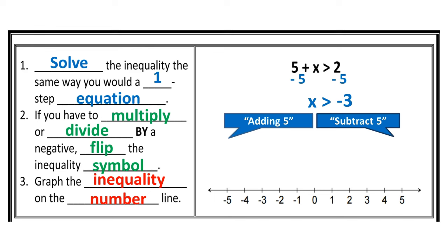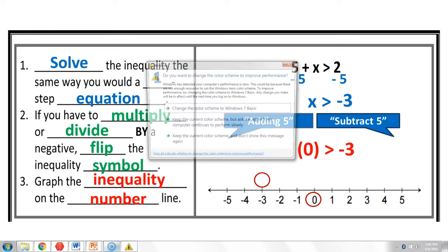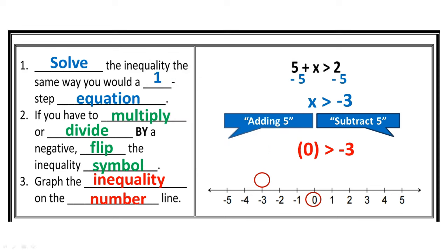X is greater than negative 3, so it's going to be an open point because it's not greater than or equal to — open at negative 3. I'm going to pick a point on the number line. 0 is always nice. 0 is greater than all negatives and less than all positives. We know exactly where 0 is, which makes it easy to check for true or false statements. If I plug in 0: is 0 greater than negative 3? That's a true statement. 0 is to the right of negative 3, and values to the right are always greater. So I'm going to point the arrow in the direction of 0. If I had a false statement, I'd point away.